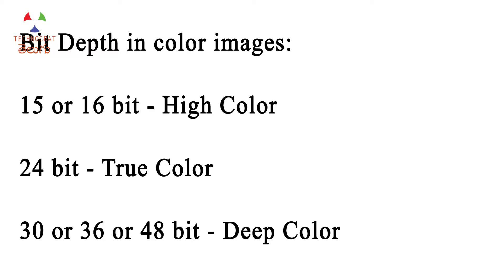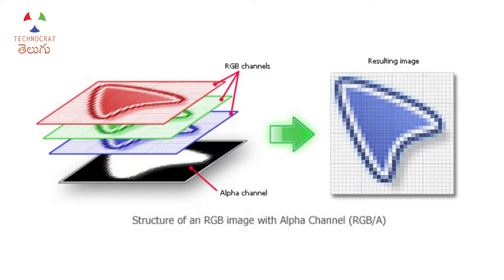We have only high-end graphics processors and high-end monitors for deep color. The alpha channel assigns bits in the image to the pixel, and it will be transparent in the pixel channel. If I assign the alpha channel to 8 bits and assign it to 0, it will be transparent in the image.